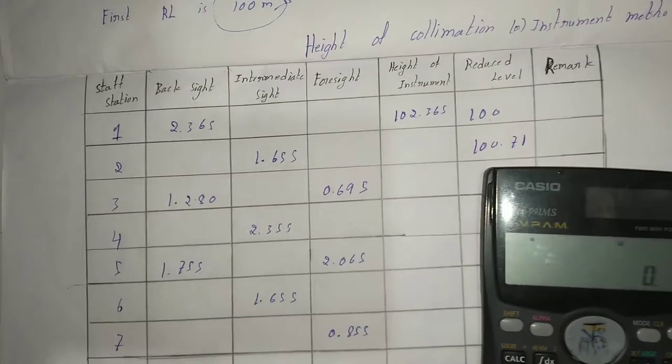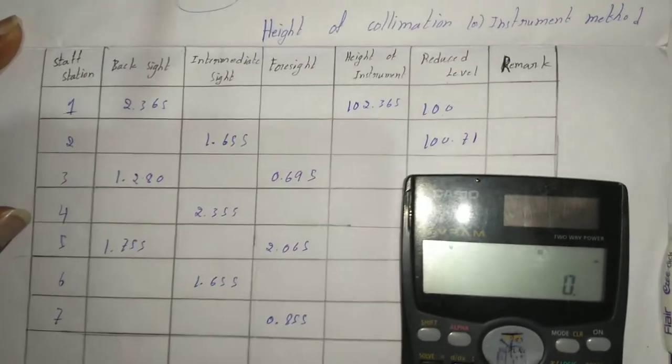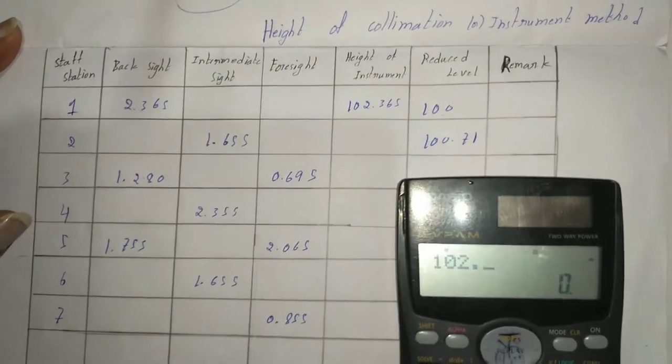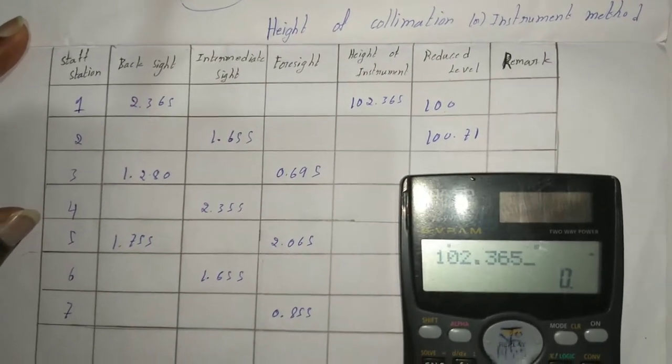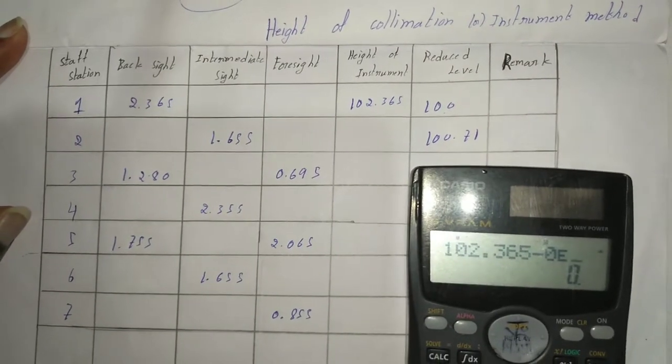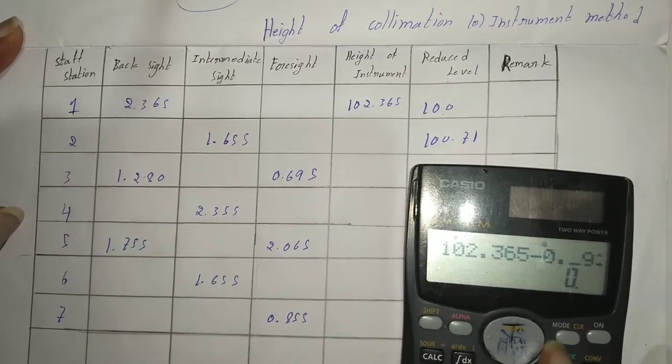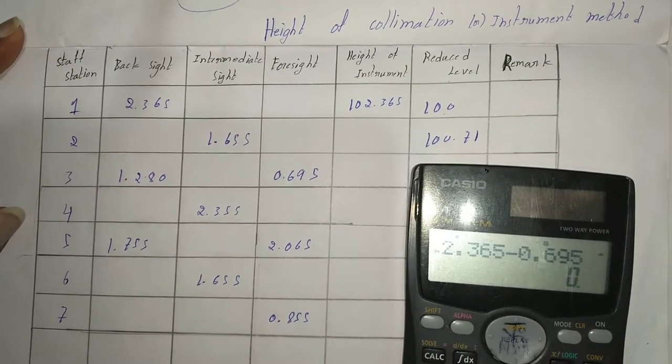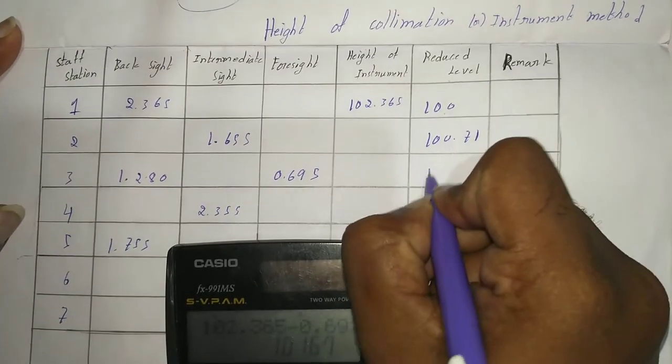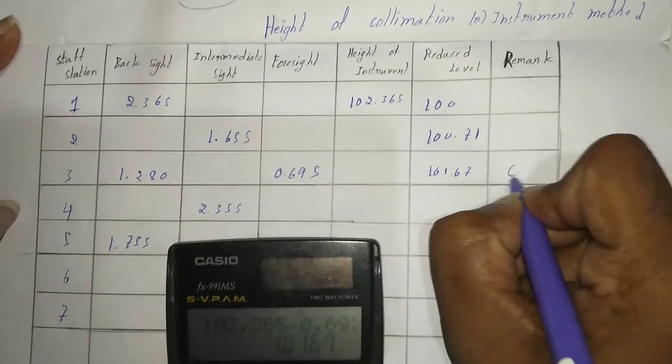Same to find all reduced levels, let RL 1.365 minus, so it is chaining point 1.